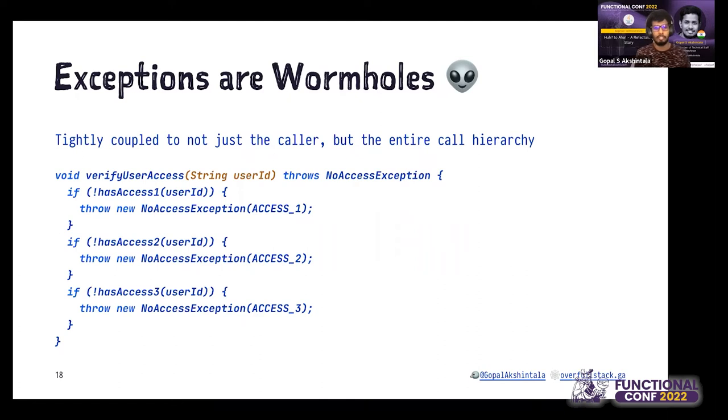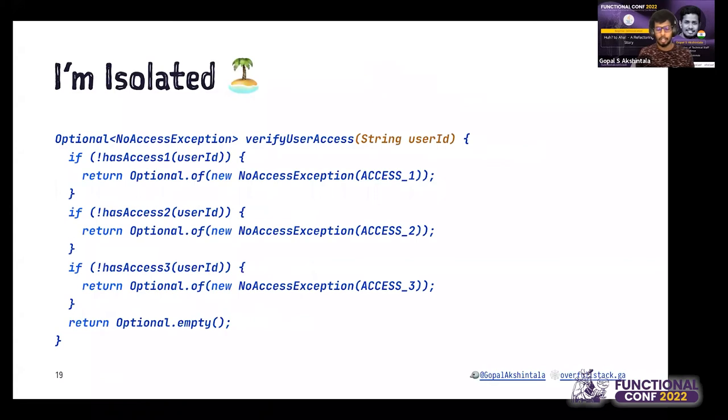I'll talk about simple examples and how we can solve them to avoid exceptions. This particular code is trying to convey that it has some problem but doesn't know how to convey when there is no problem, so it throws exceptions. The caller is supposed to handle this, and sometimes it just goes uncaught through the entire stack. The actual problem is it's not able to convey the effect of absence, for which it should use Optional. When there is no problem, it should return Optional.empty. Now the caller is no more bound to catch it or handle it. This way, the verify user access component is isolated. You can refactor this without affecting the caller as long as you're adhering to the contract.